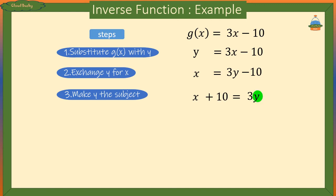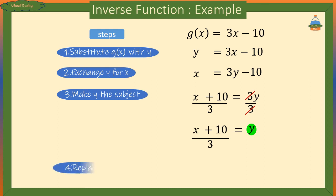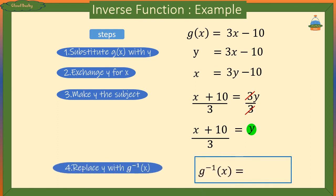We want to isolate y, so we divide both sides by 3. That gives us y equals x plus 10 all over 3. Lastly, we replace y with the inverse function notation, so the inverse of g equals x plus 10 all over 3.